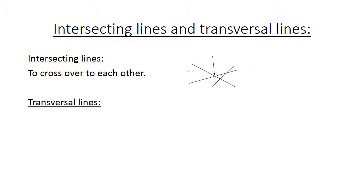Transversal line is a line that crosses at least two other lines. We look here. There's the transversal line, the dark one.